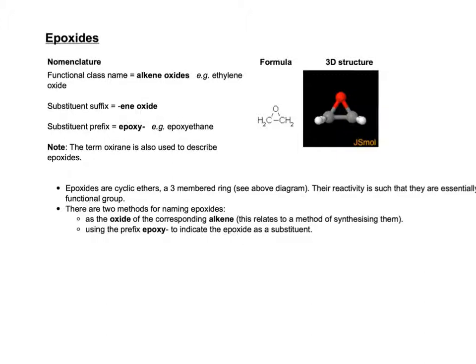Epoxides are cyclic ethers with a three-membered ring containing one oxygen atom, also called an oxirane. There are two ways to name epoxides: the first is as an alkene oxide — for example, ethylene oxide — and the second uses the prefix epoxy, so we could call this epoxyethane.